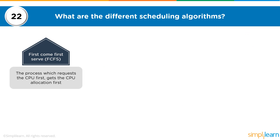The next question is: what are the different scheduling algorithms? The context is how processes are fed to the processor. The first is First Come First Serve — the process which requests the CPU first gets CPU allocation first. In FCFS, the first process to request processing time will get that time allocated, run through completion, then the next, and so on.